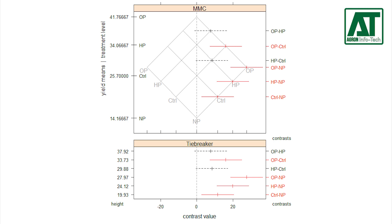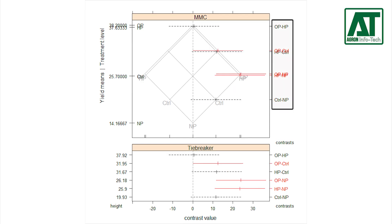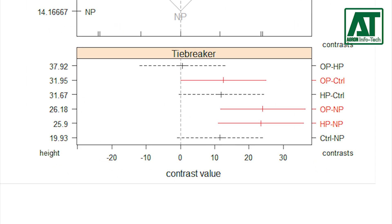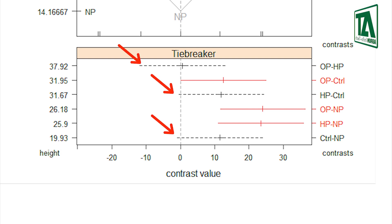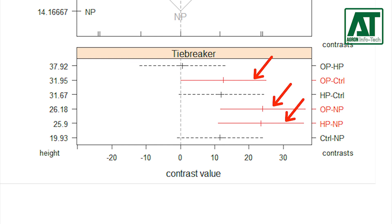Sometimes the MMC plot shows overlapping of labels for each set of mean comparison on the right axis. The tiebreaker panel is needed to respond to the overprinting of labels in the right axis of the MMC panel. The tiebreaker graph shows an estimate for the difference of means and the two key adjusted 95% confidence intervals for the difference. Intervals that contain zero indicate that the difference of means is not significant; intervals that do not contain zero indicate significant differences.